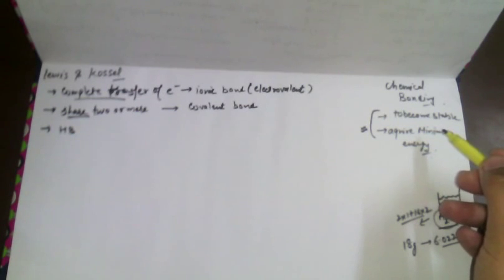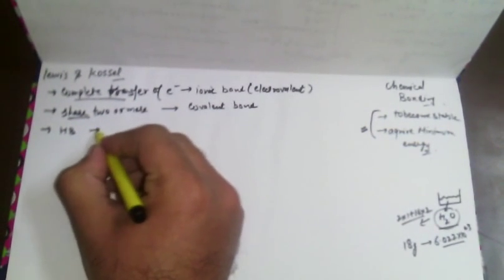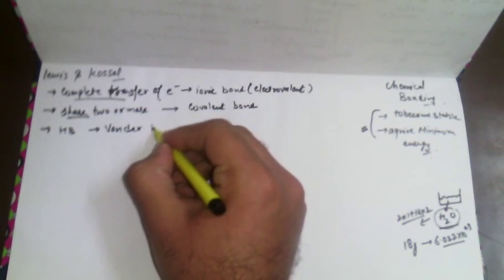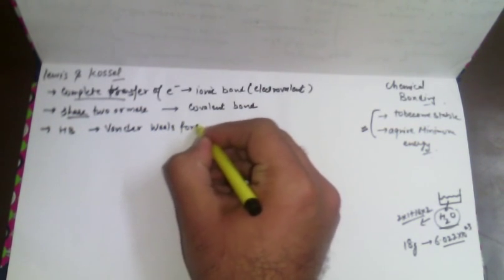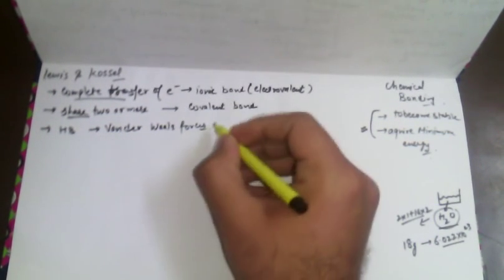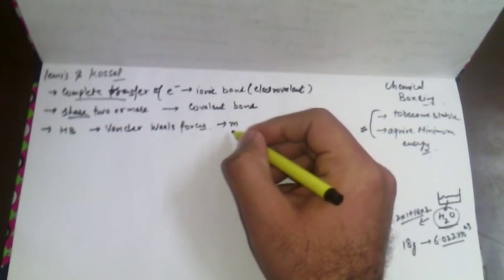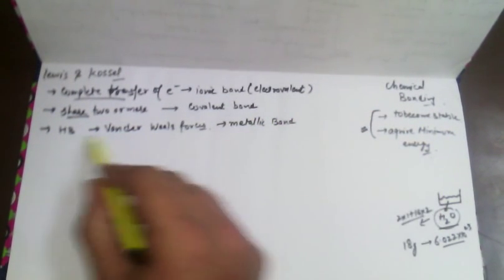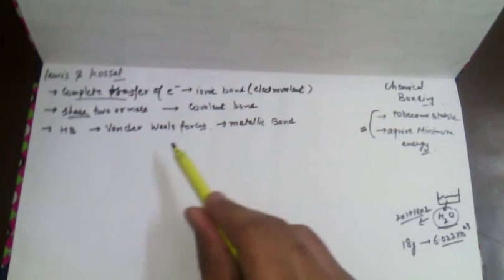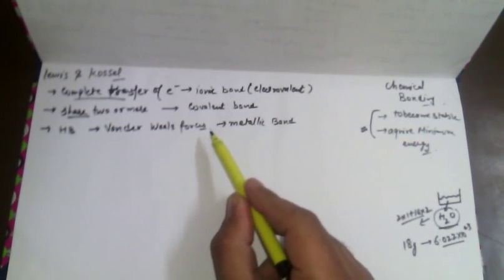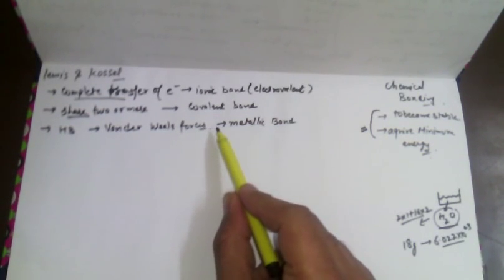The third type of bonding is hydrogen bonding, and the fourth is Van der Waals forces — named after the scientist Van der Waals. Another type is metallic bond. These three types of bonding — hydrogen bonding, Van der Waals forces, and metallic bond — arise because of intermolecular attraction between covalent bonds, and so we can say these three are part of the covalent bond category.